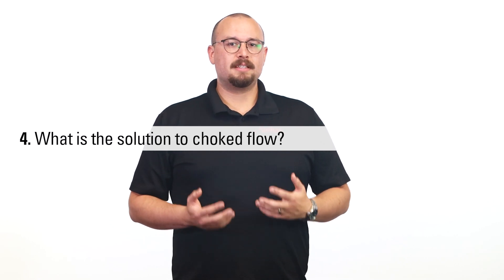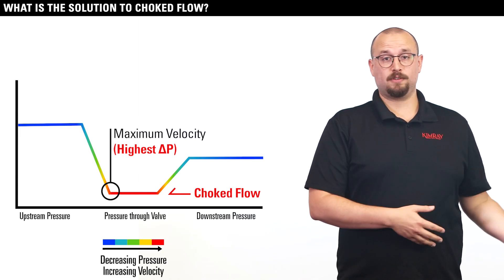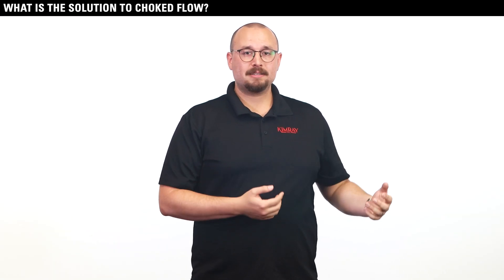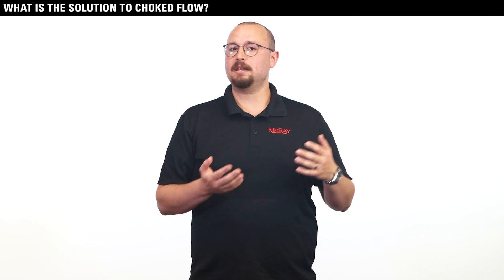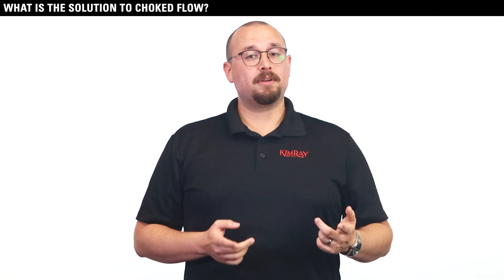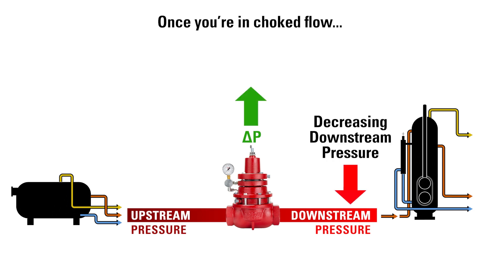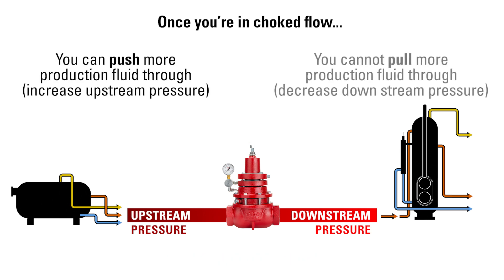Question four addresses this issue by asking: what is the solution to choked flow? To get your valve out of choked flow, you must decrease the pressure differential or increase the orifice size of the valve. If you are worried about not passing enough volume through the valve in choked flow, you need to increase your valve trim size, or you can increase your upstream pressure. One important distinction: once you're in choked flow, decreasing downstream pressure to increase the pressure differential doesn't do anything to increase the flow rate. In other words, when you're in choked flow, you can push more production fluid or gas through, but you can't pull more through.